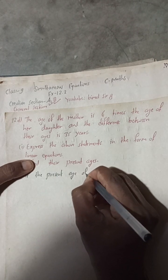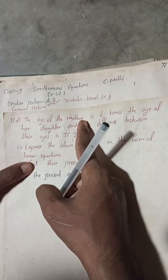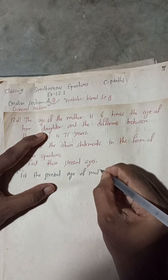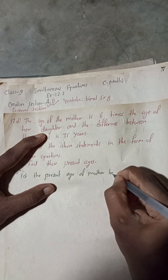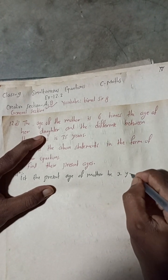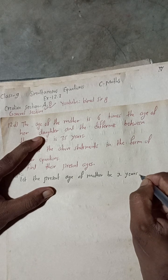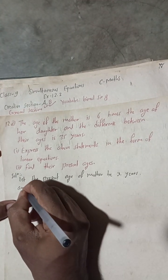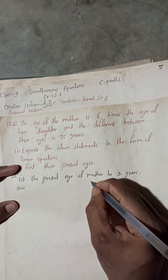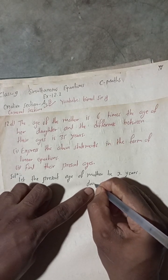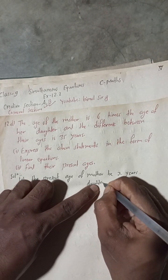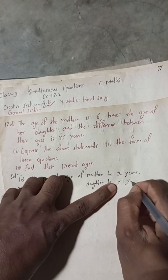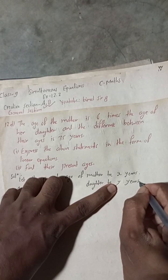Let the present age of mother and daughter be: the present age of mother be x years, and the present age of daughter be y years.